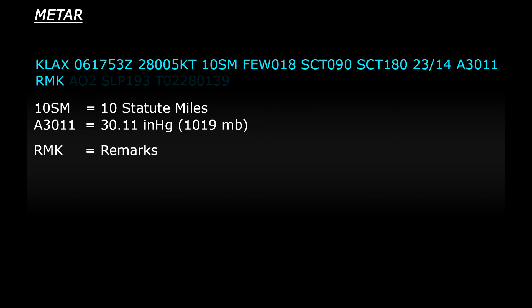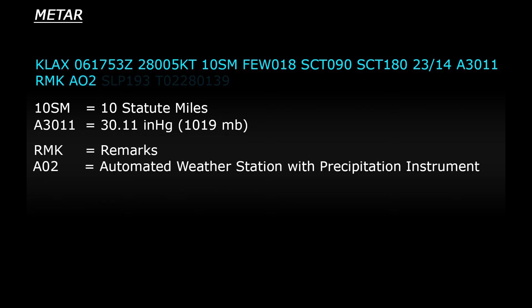After all of the main information, the report gives some additional information as remarks, noted by the RMK in the report. The first remark, AO2, indicates that the report was created by an automated weather station. The 02 indicates that the station has precipitation instruments to measure rain and/or snow.